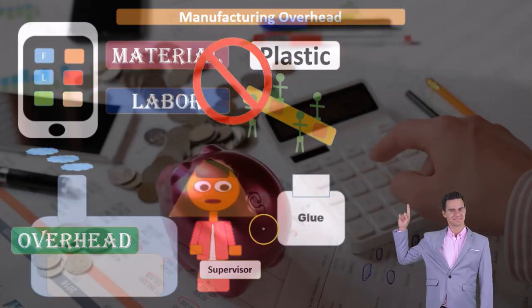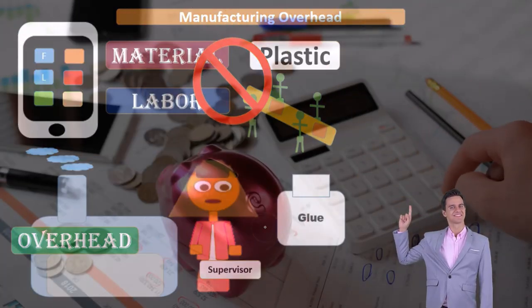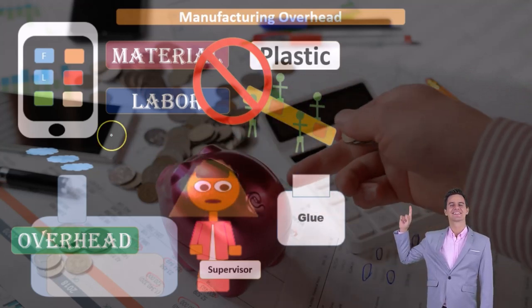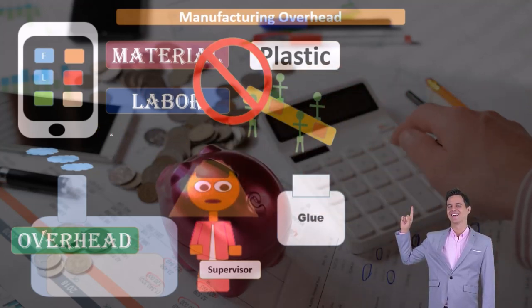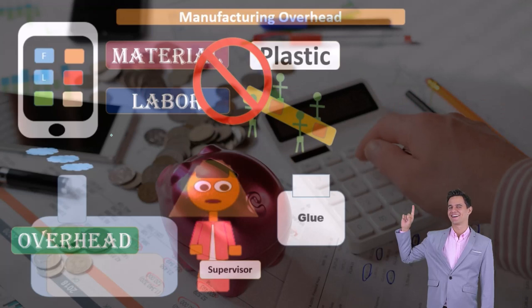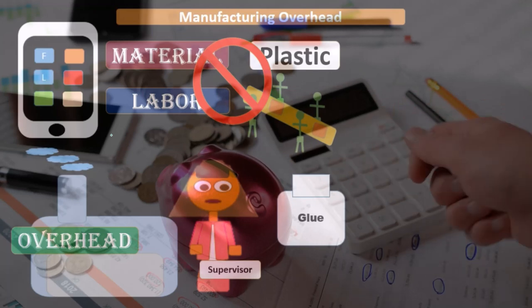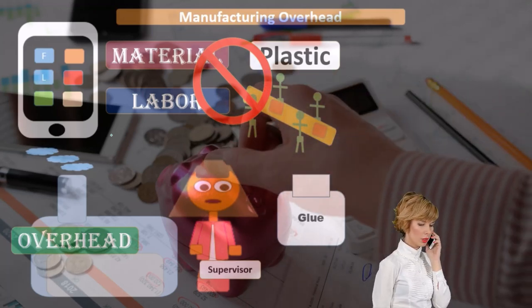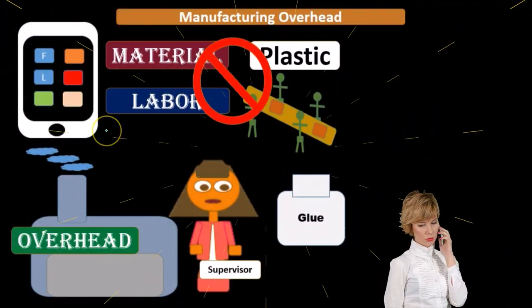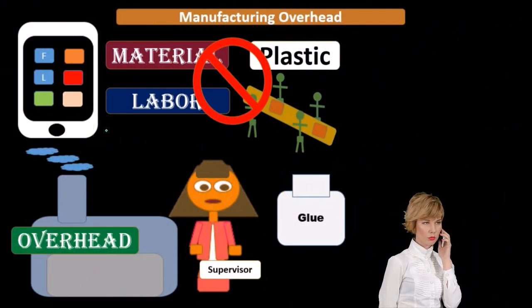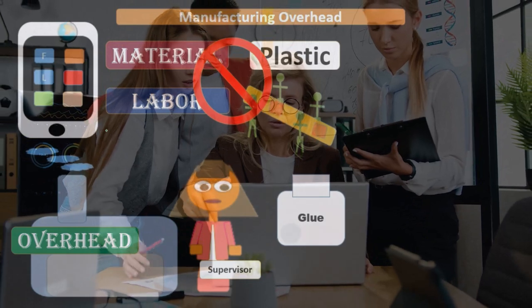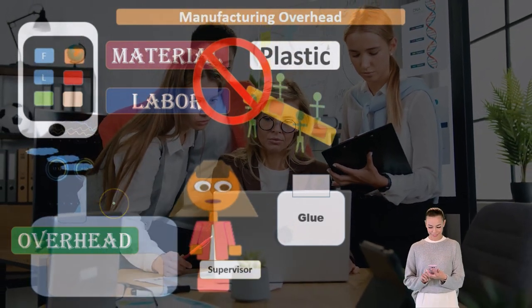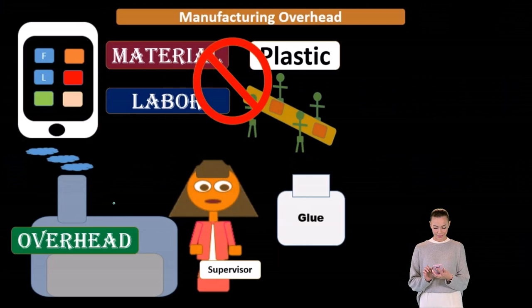The same thing applies to something like glue or small materials. You might be thinking, well, the glue is directly involved in the production of the inventory. However, it's pretty small in nature. So therefore, it might not be worth tracking the cost of each unit of glue going into this particular inventory product. Therefore, it's probably more cost effective to just put it in the overhead and then apply it out using some type of estimate.